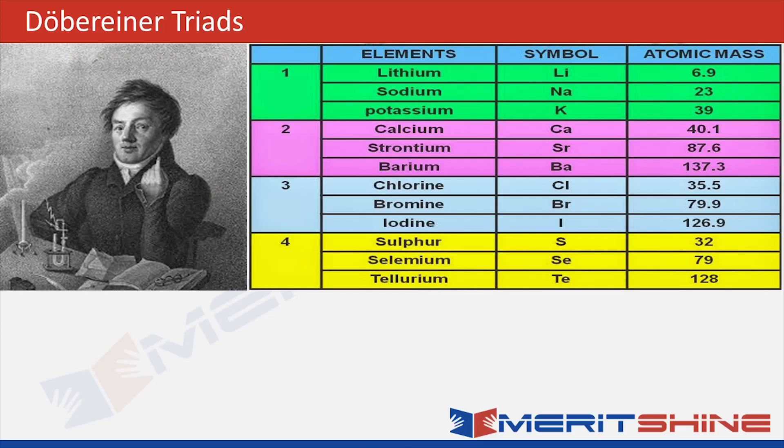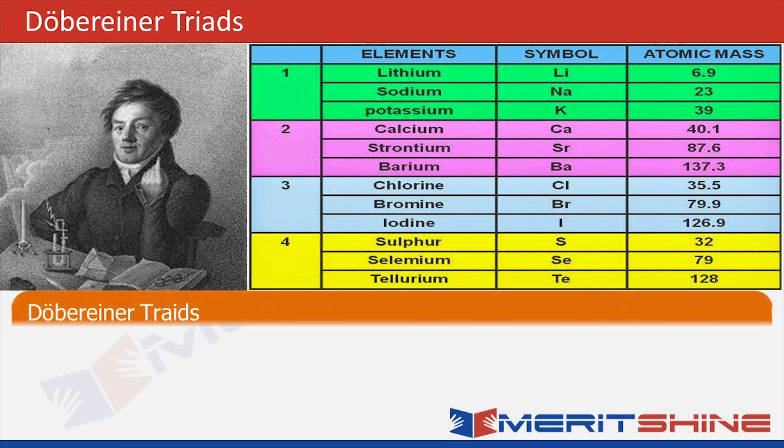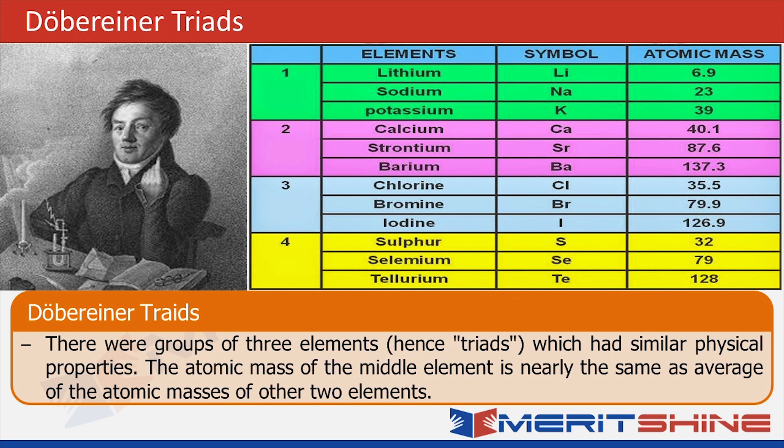And then came Dobereiner's Triad. In 1829, he arranged certain elements with similar properties in groups of three in such a way that the atomic mass of the middle element was nearly the same as the average atomic mass of the first and third elements.